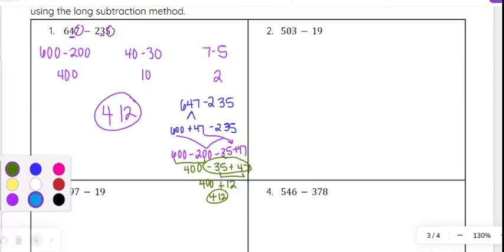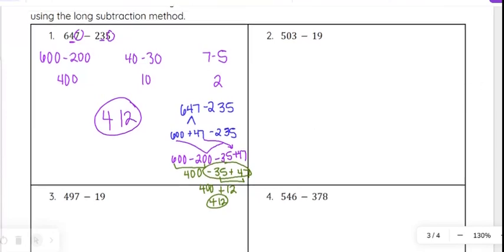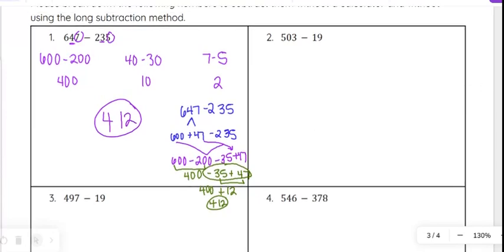And then using the order of operations, you could even combine this negative 35 plus 47 and get 12 there. And then you're just doing 400 plus 12 because negative 35 plus 47 is 12. And so 400 plus 12 is where we get the 412 from. So that's another option. I show you these not because you would necessarily be fluent in all of them, because one might make more sense to one person and a different method might make more sense to another.